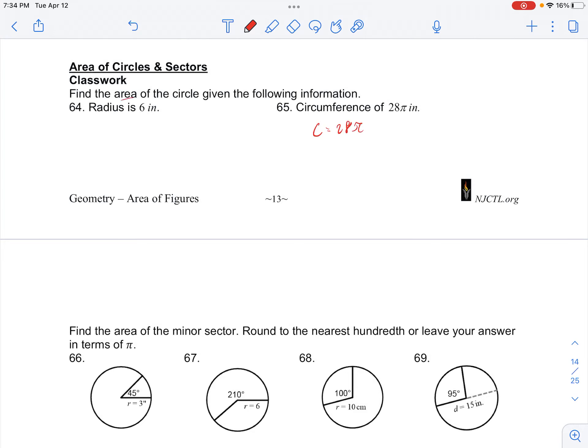So if our circumference is 28π, and we know circumference is equal to 2πr, then our radius would be 28π divided by 2π, which would leave us with 14 inches for our radius.